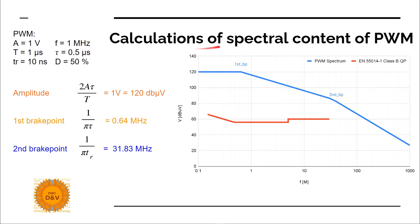For the calculations of spectral content of PWM, we use the following example signal parameters: amplitude 1 volt, frequency 1 MHz, period 1 microsecond, tau (T-on) 0.5 microseconds, rise time 10 nanoseconds, and duty cycle 50%.